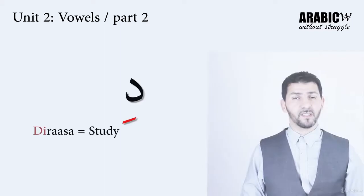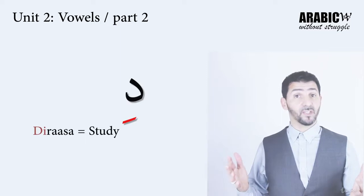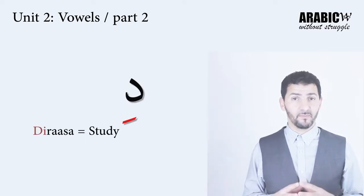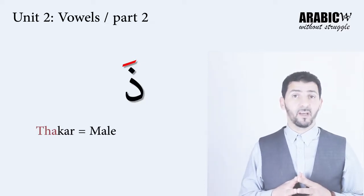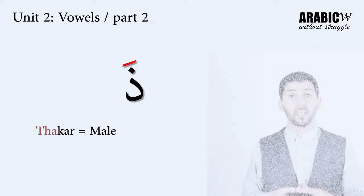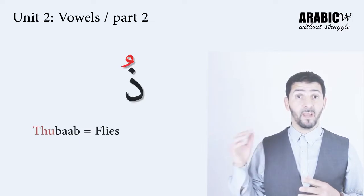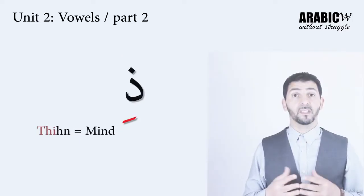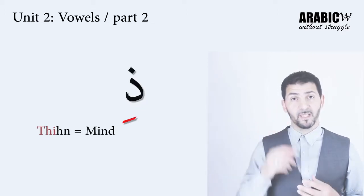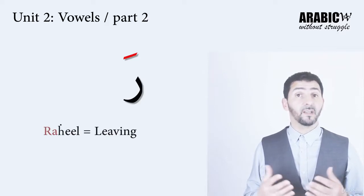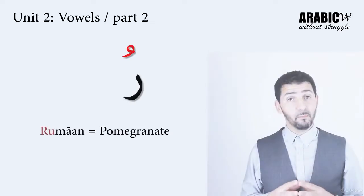دال with كسرة makes دي, like دراسة — meaning 'a study or research'. ذال with فتحة makes ذا, like ذكر. ذال with ضمة makes ذو, like ذباب — meaning 'flies'. ذال with كسرة makes ذي, like ذهن — meaning 'mind'. راء with فتحة makes را, like رحيل — meaning 'traveling or leaving'.